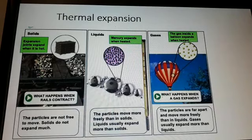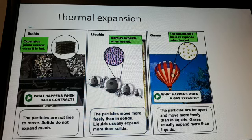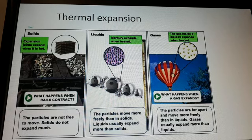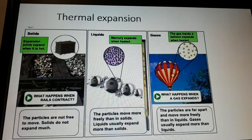Next is thermal expansion. Thermal expansion means when an object is heated, it expands. When heat is applied, temperature increases, and the average kinetic energy of the molecules increases, causing particles to vibrate more. The rate of expansion depends on the type of material — solid, liquid or gas. Solids expand the least — we cannot see it with the naked eye. Liquids expand more than solids, and gases expand the most.